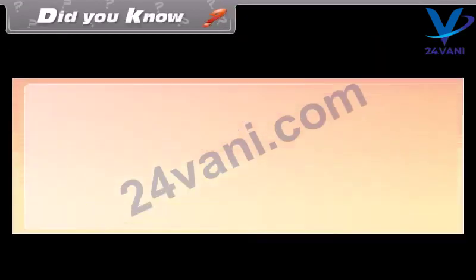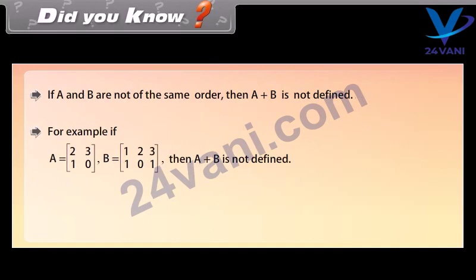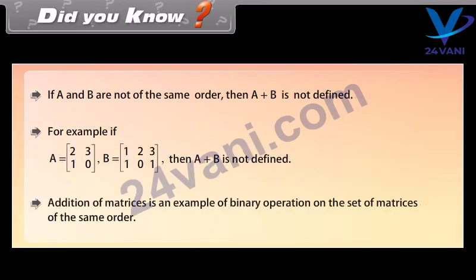Did you know? If A and B are not of the same order, then A plus B is not defined. For example, if A is the 2 by 2 matrix with rows [2, 3] and [1, 0], and B is the 2 by 3 matrix with rows [1, 2, 3] and [1, 0, 1], then A plus B is not defined. Addition of matrices is an example of a binary operation on the set of matrices of the same order.